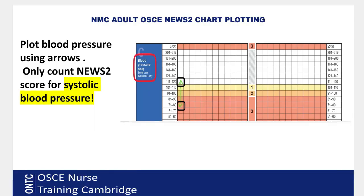Blood pressure is plotted with an upward arrow for systolic and a downward arrow for diastolic in the correct boxes, then join them with a solid or dotted line — both are acceptable. For scoring purposes, only look at the systolic blood pressure; ignore the diastolic. The chart itself states in small print: 'Score for systolic BP only.'